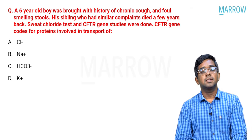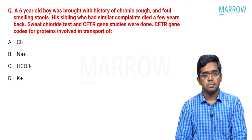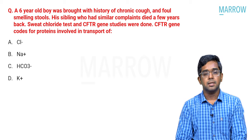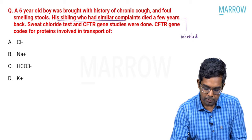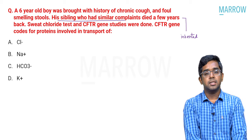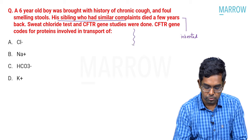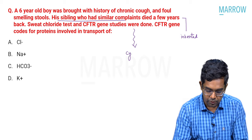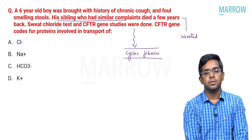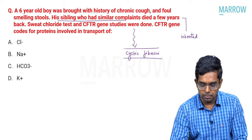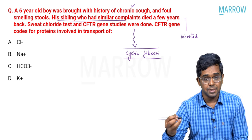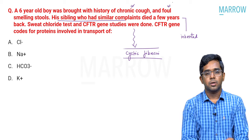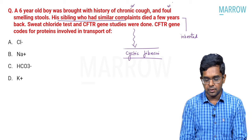Moving on: a six-year-old boy presented with chronic cough and foul-smelling stools. His sibling had similar complaints and died a few years back — a family history indicating an inherited condition. Sweat chloride and CFTR gene studies are done, making the diagnosis clear: cystic fibrosis. Cystic fibrosis is a repeatedly asked topic, characterized by recurrent pneumonia presenting as chronic cough, and malabsorption — especially steatorrhea — presenting as foul-smelling stools.